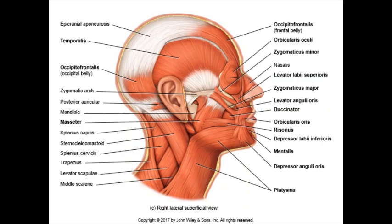You have one sternocleidomastoid for each side of your neck because you have two mastoid processes, one for each temporal bone, one for each side of your head. What does this muscle do? It helps you turn the head — to rotate the head. Specifically, it turns the head to the opposite side: your right sternocleidomastoid will turn the head to the left, and your left sternocleidomastoid will turn the head to the right. You can feel this when you put your hands on your neck and turn — you'll feel the neck tense up on the opposite side of the turn.